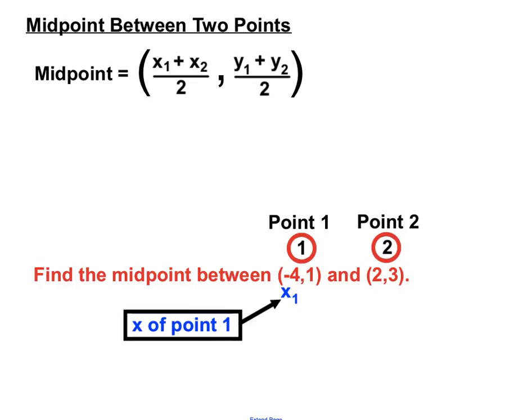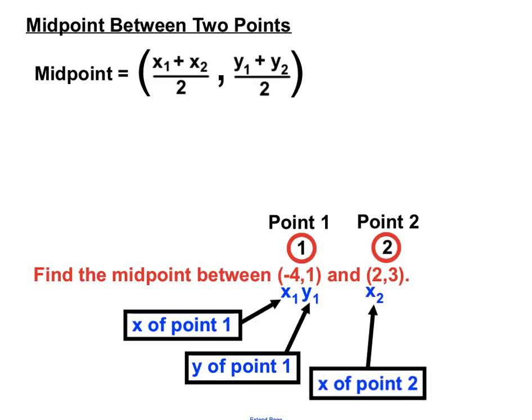The first value of any ordered pair is an x value, so we'll call that x1, and the second is y1. Now for Point 2, the first value is x2, and the second is y2.